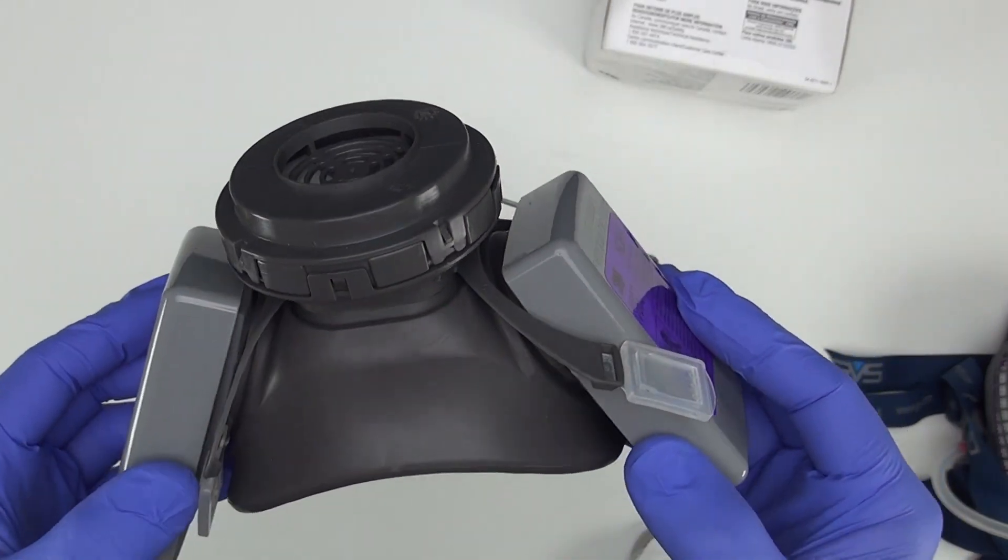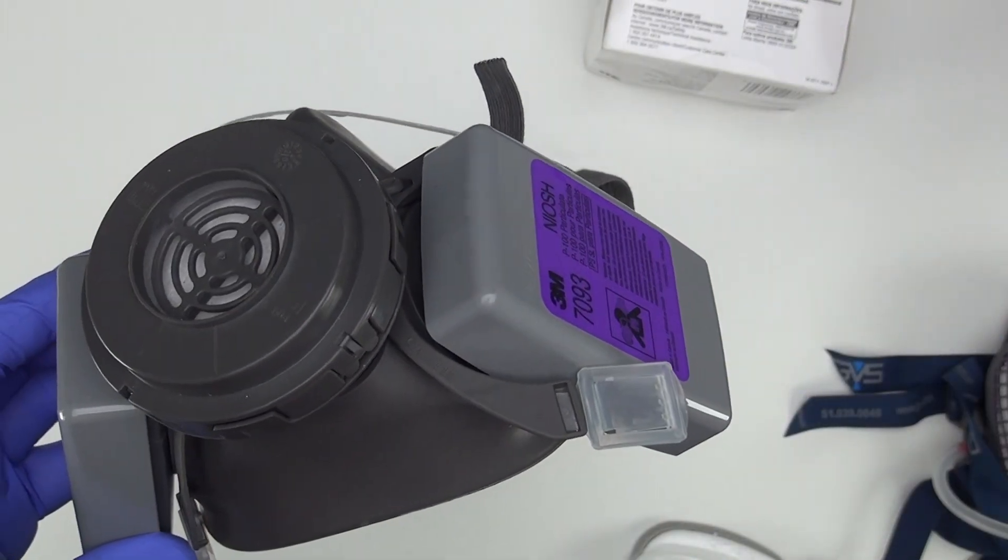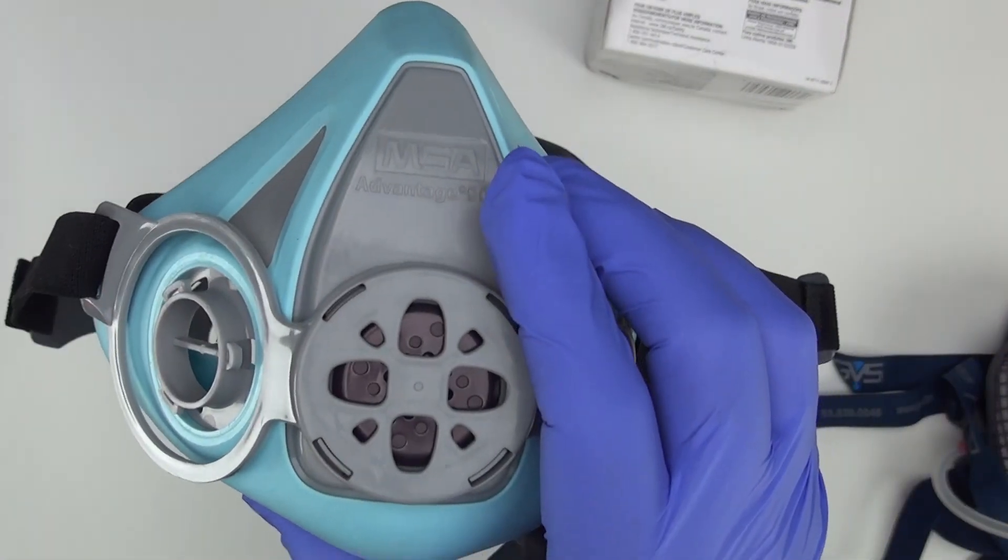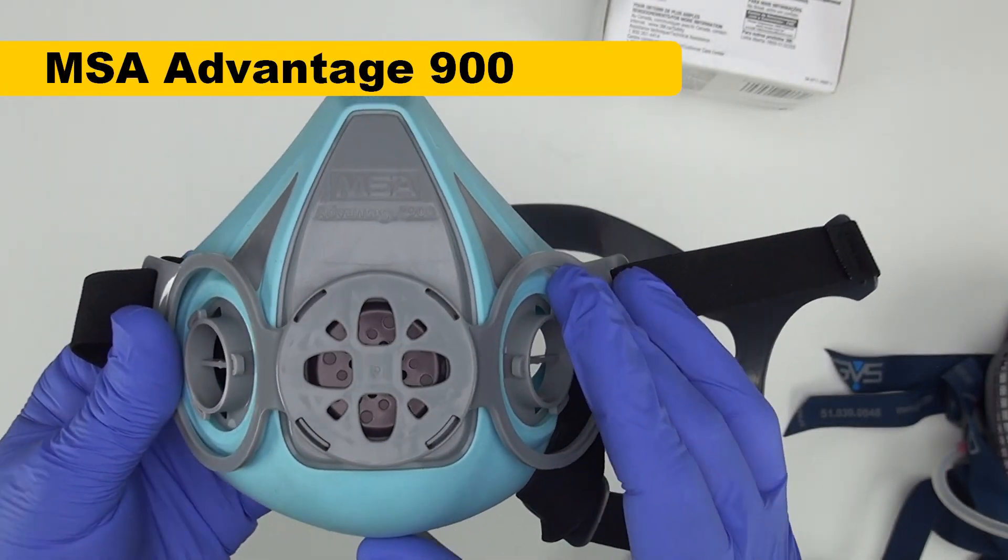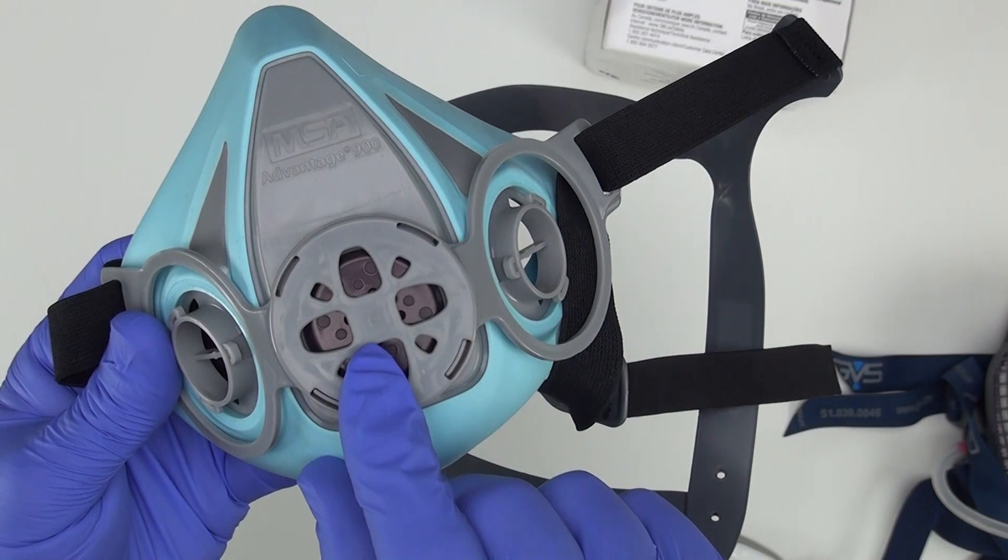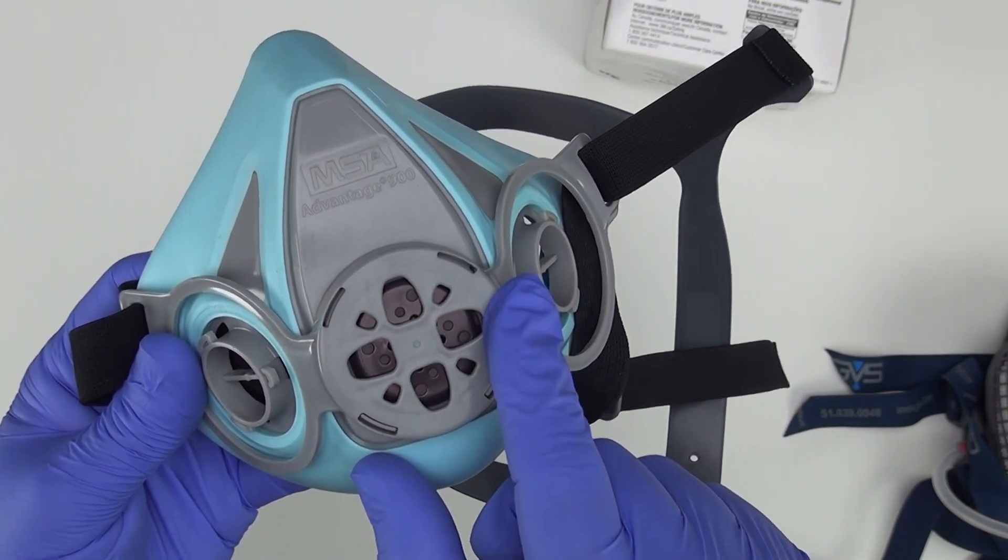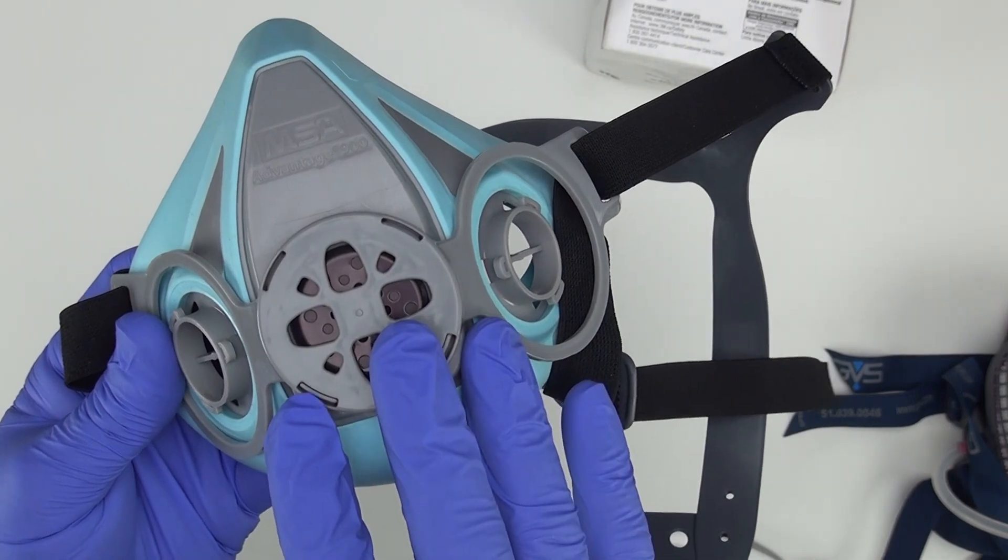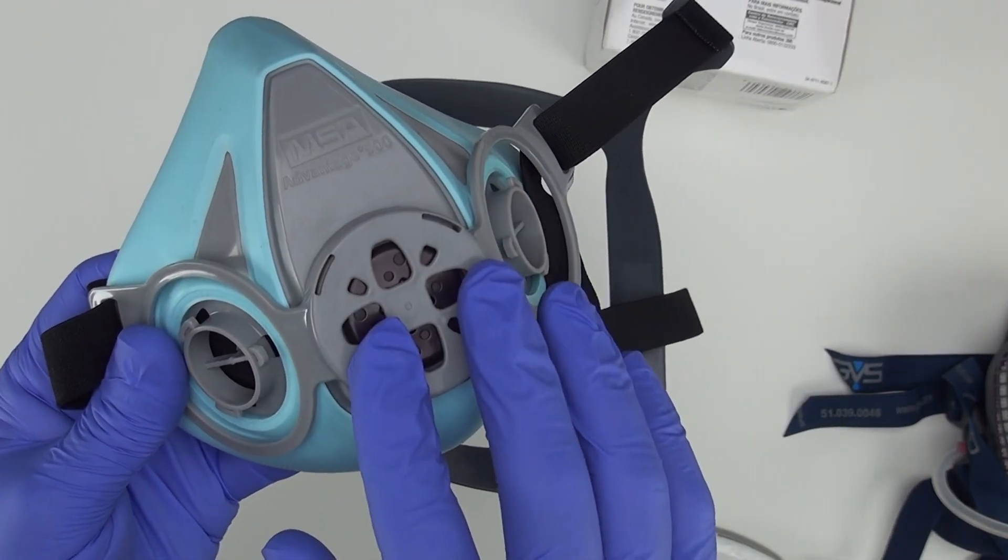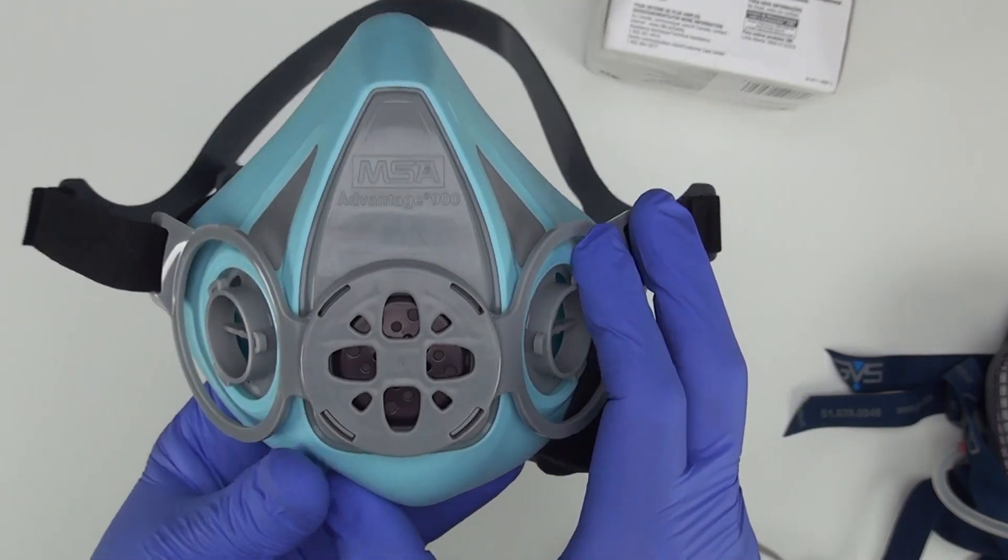There's another source control mask that's NIOSH approved that you can get. And it's got a unique feature that these other masks don't have. This is the MSA Advantage 900 mask. And it has a little speech diaphragm. It goes right where the valve used to be in older models of the mask. That lets you be more intelligible. And it doesn't let any air out. It's something that a lot more masks could use. And I wish 3M would add one.